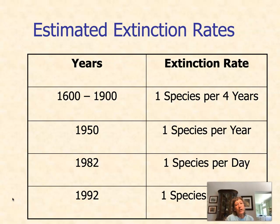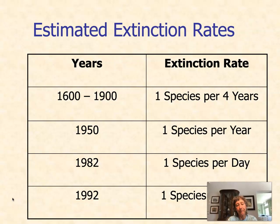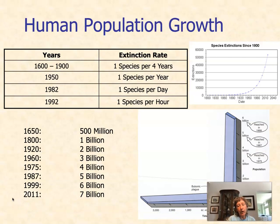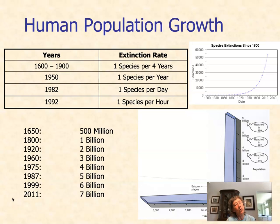We can look at estimated extinction rates — these are estimates since we don't even know how many species are on the planet. Between 1600 and 1900, we were losing one species every four years. By 1950, one species per year; by 1982, one per day; and by 1992, one per hour. If you look at a graph of human population growth correlated with estimated extinction rates, you can see a J-shaped curve in human population growth. As the human population took off, that's associated with a J-shaped curve in species extinctions — a J-shaped curve representing exponential growth. So with exponential growth in the human population, we see exponential growth in species extinctions.